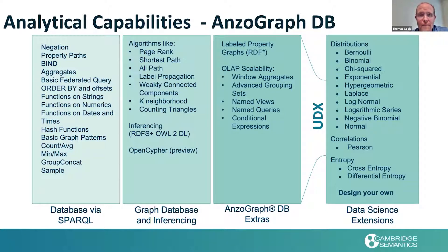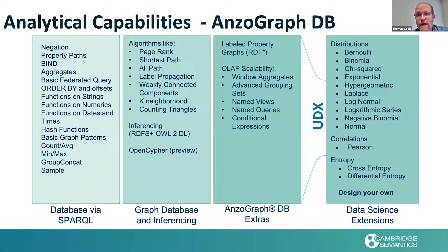We've also added a number of OLAP capabilities on top of the database like cubing, roll-ups, and windowed aggregates. The ability to create named views and named queries, and conditional expressions. We've also built a user-defined extension interface that allows you to write your own custom extensions — either functions, aggregates, or services. We've also used that same interface to deploy a library of data science functions: over 50 functions available to do feature engineering and data discovery, including various distributions and correlation, entropy, principal component analysis, single value decomposition, et cetera.